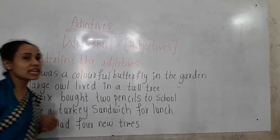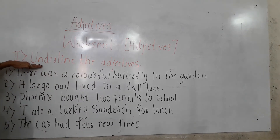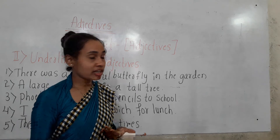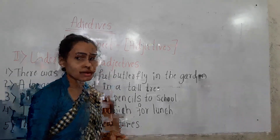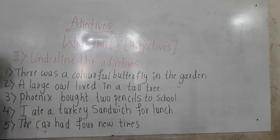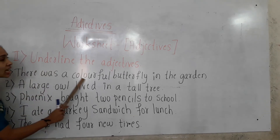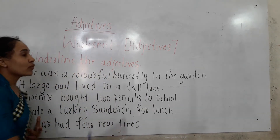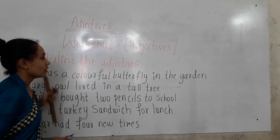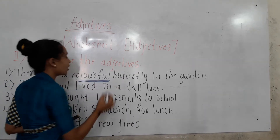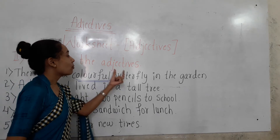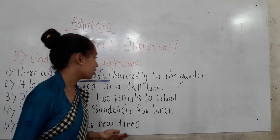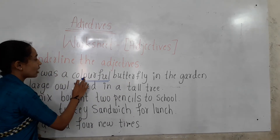We have to first identify which word is the adjective, then underline it. Look at the first sentence: 'There was a colorful butterfly in the garden.' Which word is the adjective? Colorful. Colorful is the adjective which adds more meaning to the butterfly. Butterfly is the noun, so we have to underline the word colorful.